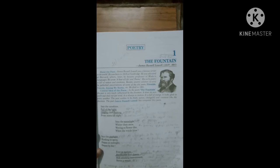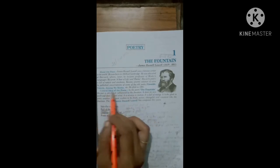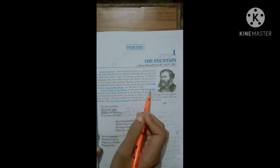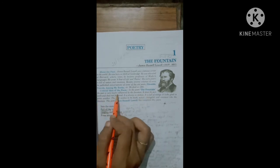Now let's read the central idea. Our central idea is that in the poem The Fountain, the poet is very much influenced by the fountain.